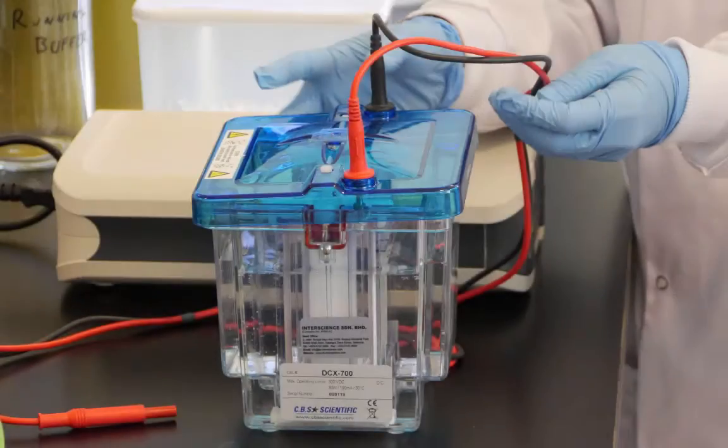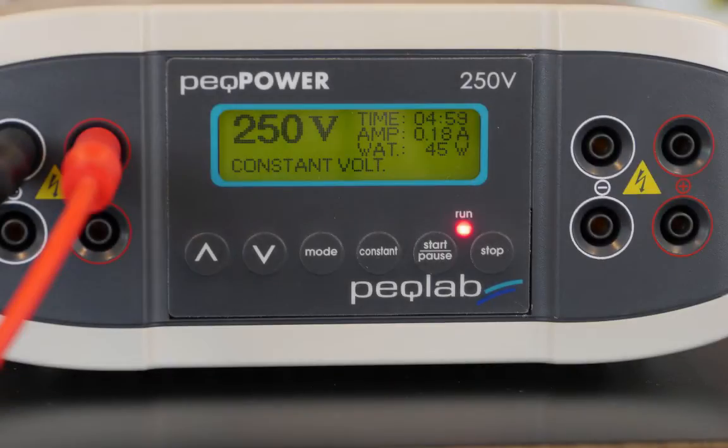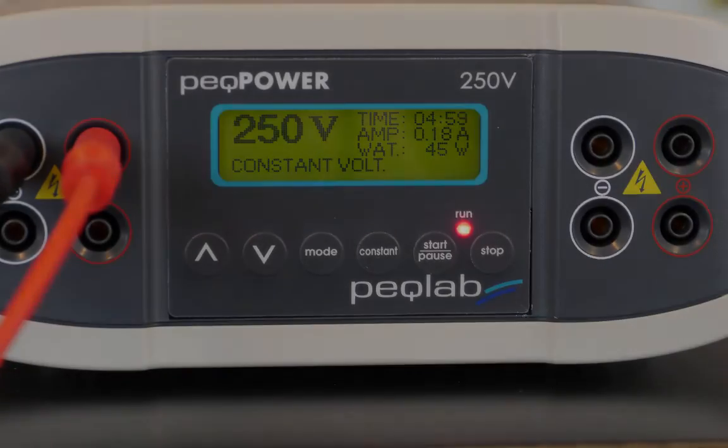The lid was placed on the tank and the gel was run at a constant voltage of 250 volts, 0.1 amp per gel.